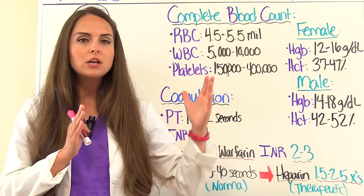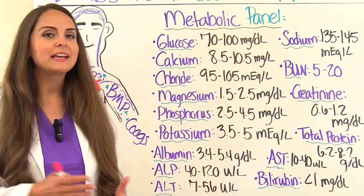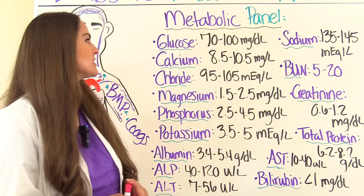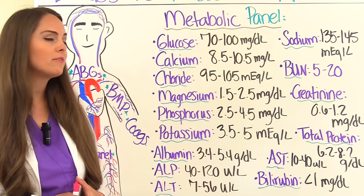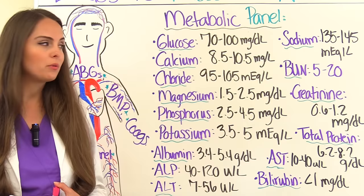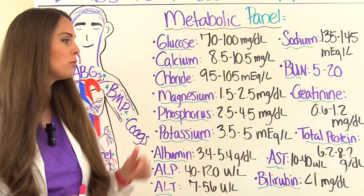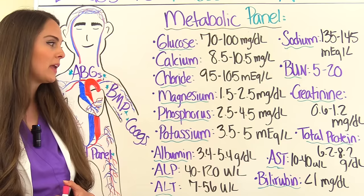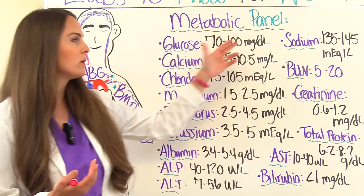Now let's switch and look at the metabolic panel, which tells us about fluid and electrolytes, glucose, renal function, and if comprehensive, liver function as well. Normal glucose is 70 to 100 milligrams per deciliter. Calcium is 8.5 to 10.5 milligrams per liter. Chloride is 95 to 105 milliequivalents per liter. Magnesium is 1.5 to 2.5 milligrams per deciliter. Phosphorus is 2.5 to 4.5 milligrams per deciliter. Potassium is 3.5 to 5 milliequivalents per liter. And sodium is 135 to 145 milliequivalents per liter. How I remember those is that they're like multiples of five — everything is represented with five.